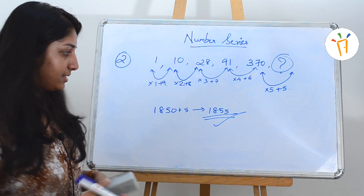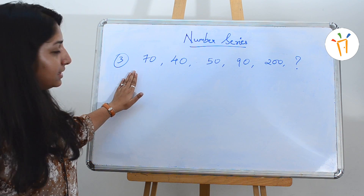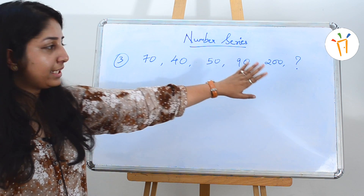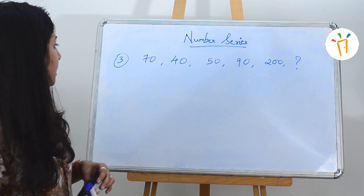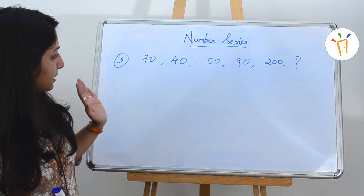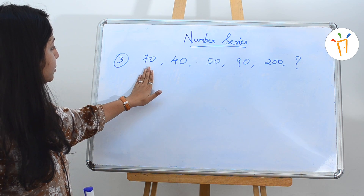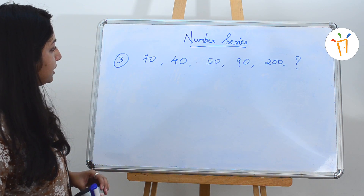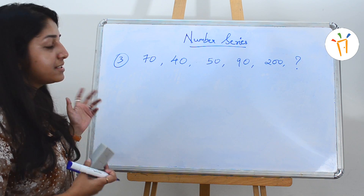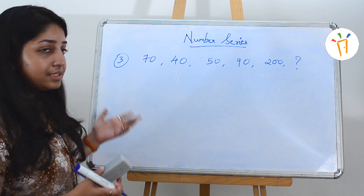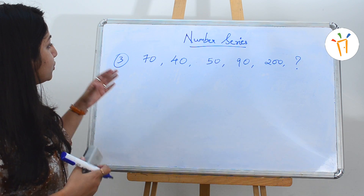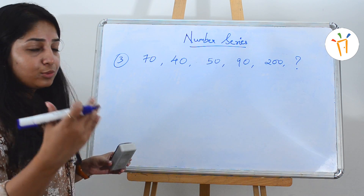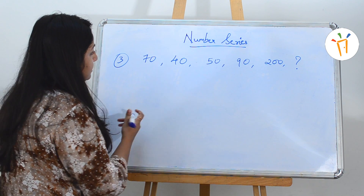Now let's move on to the third type. The third problem is: 70, 40, 50, 90, 200 — find the next number. Whenever you find a series where the second number is almost half the first and closer to the third number, it is a half pattern series. To solve it, start by multiplying the first number by 0.5.